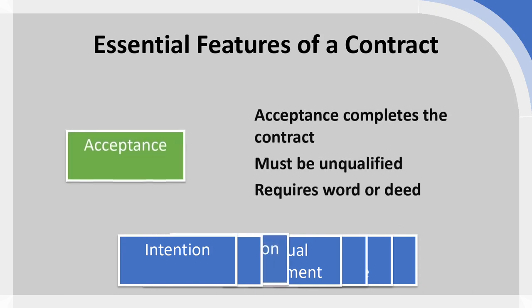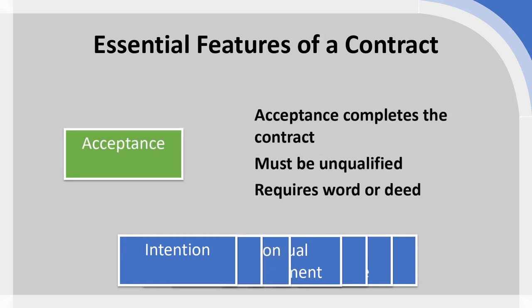The next essential feature — once you have an offer and consideration — would be acceptance. There is a need for unqualified acceptance, which would then complete the agreement. It does require words or deeds — remember action contracts require something clearly affirmative, proactive, and unambiguous. But that itself, once done, marks the end of negotiation and the start of the agreement.